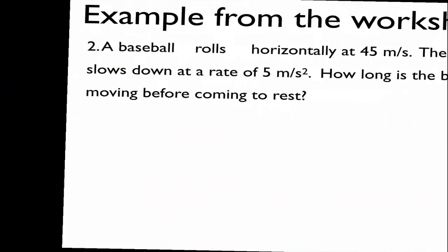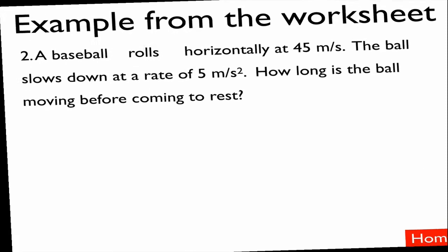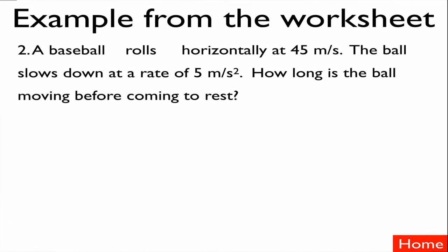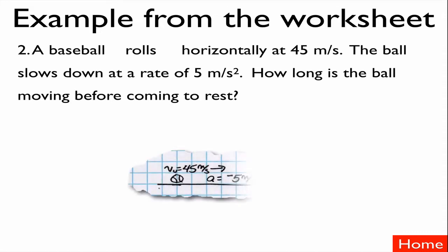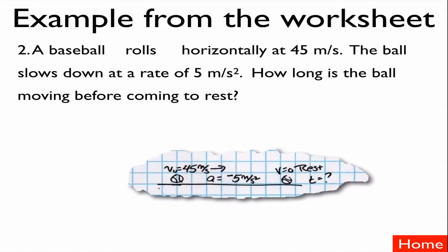Question number two. A baseball rolls horizontally at 45 meters per second. The ball slows down at a rate of 5 meters per second squared. How long is the ball moving before coming to rest? Here's a diagram of the situation — I've got my initial velocity, my acceleration, and my final velocity, and I got all these numbers from unit clues.